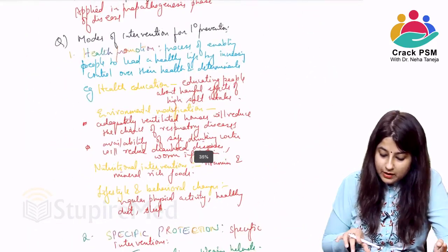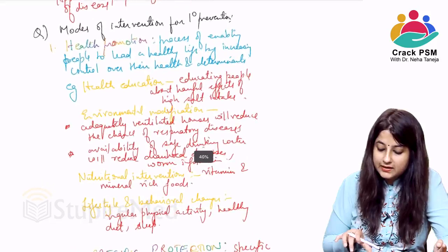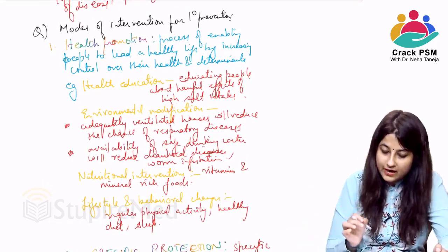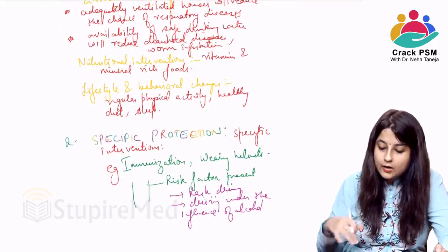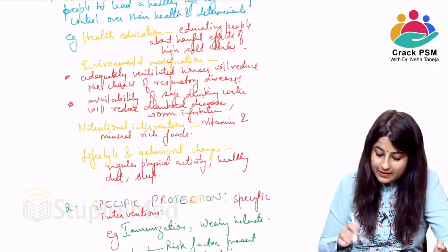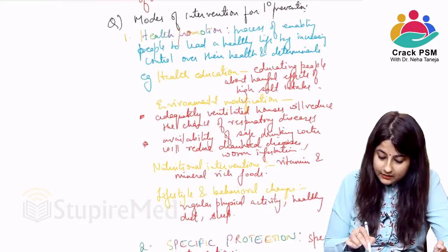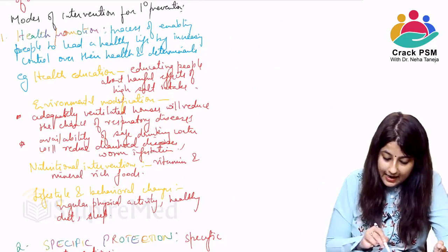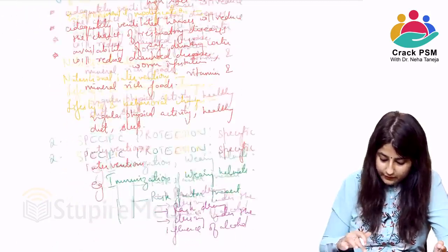To summarize, primary prevention is done when disease has not yet occurred but risk factors are present. We achieve it by health promotion and specific protection.